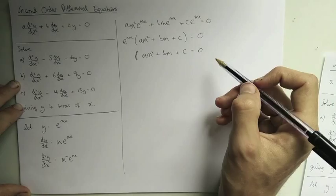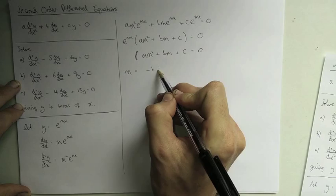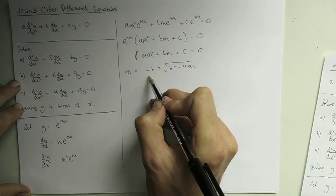Since we know a, b, and c, we can solve this quadratic. We could use factorization, completing the square, or the quadratic formula: m = (−b ± √(b² − 4ac)) / 2a.